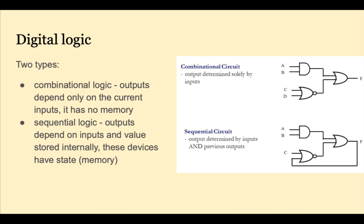There are two types of digital logic. In combinational logic, the output depends solely on the current inputs. It has no memory or state. In sequential logic, outputs depend on inputs and the internal state. These devices retain state or memory.